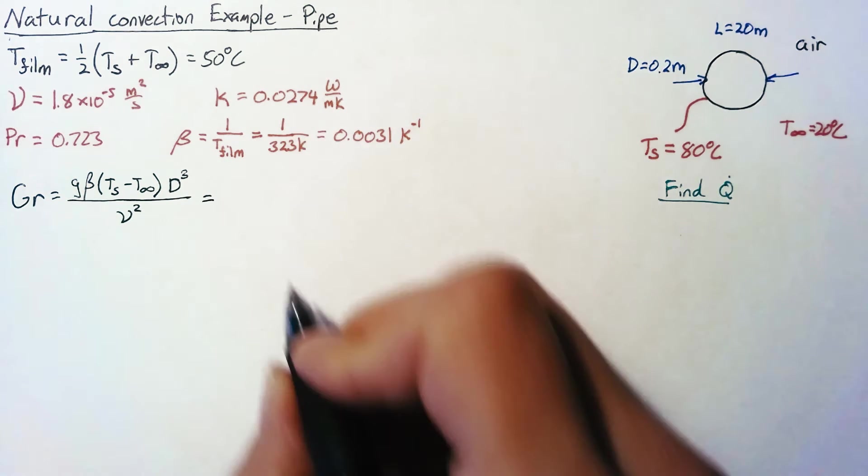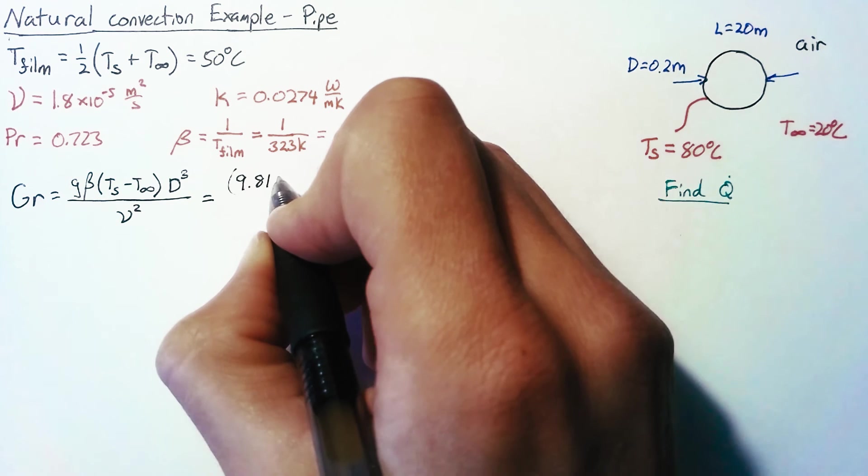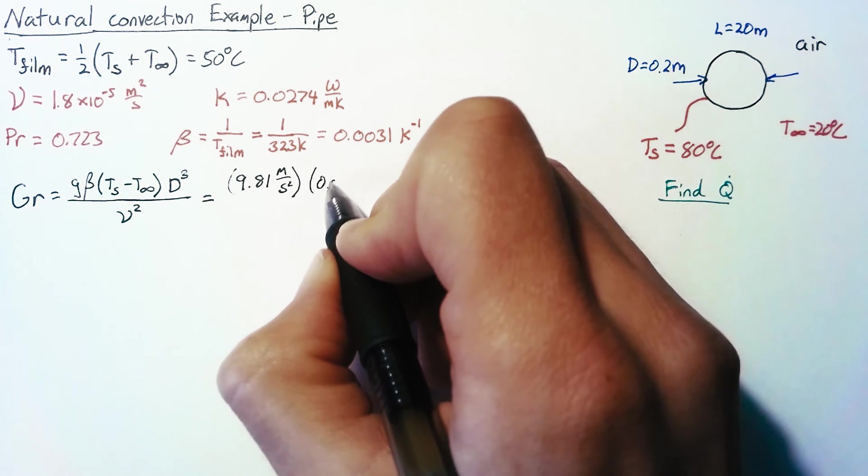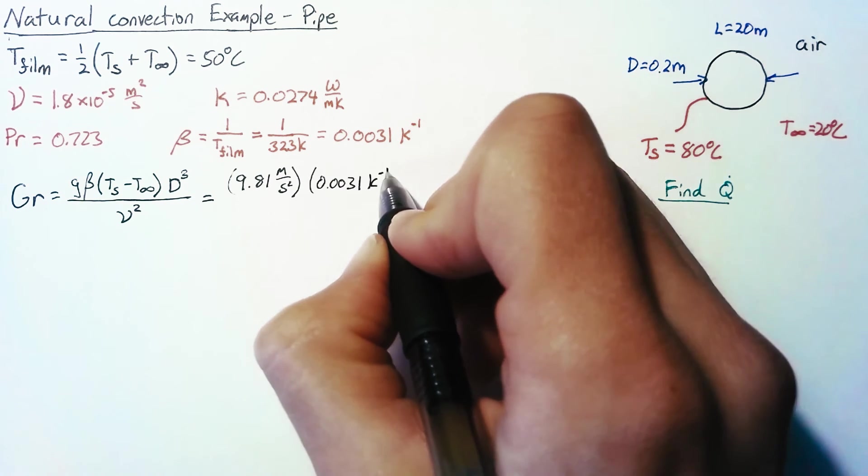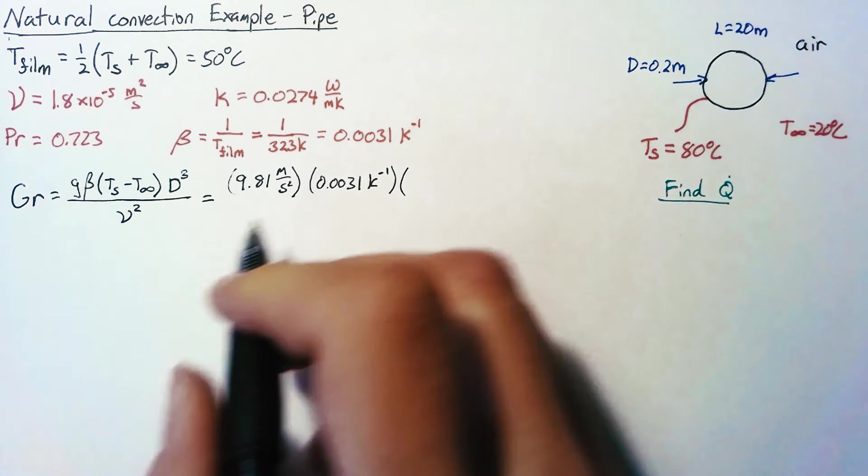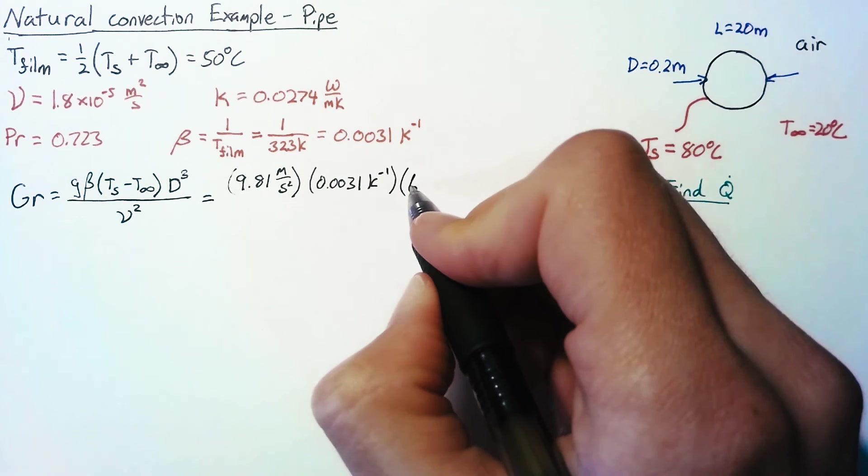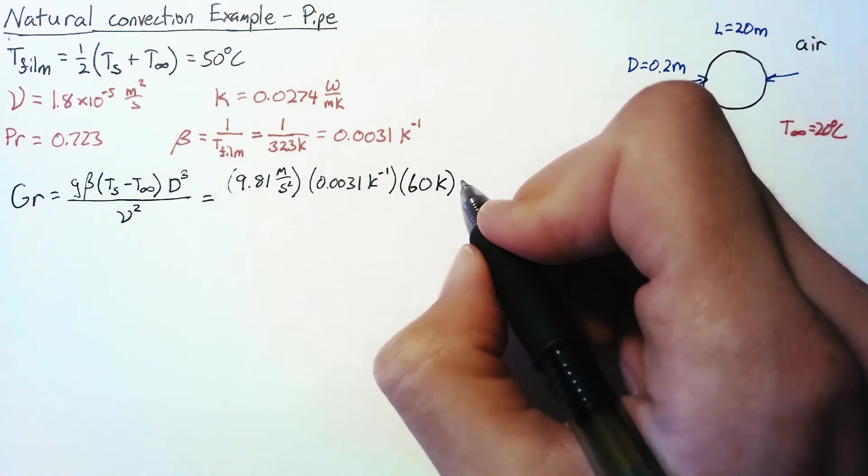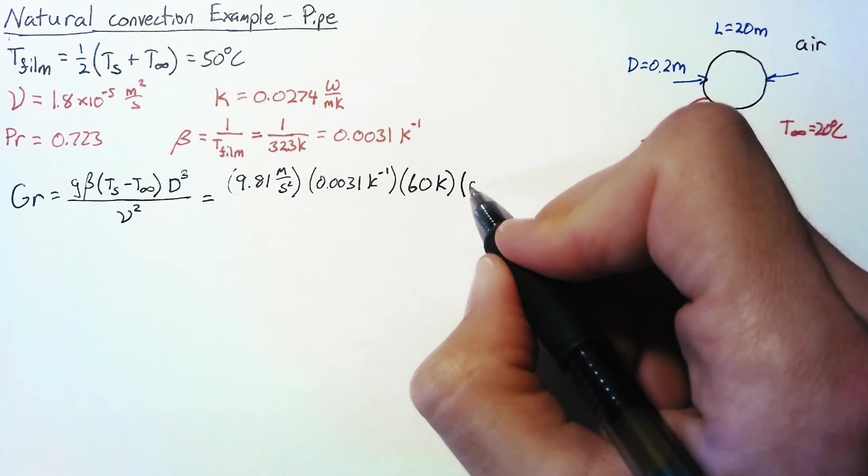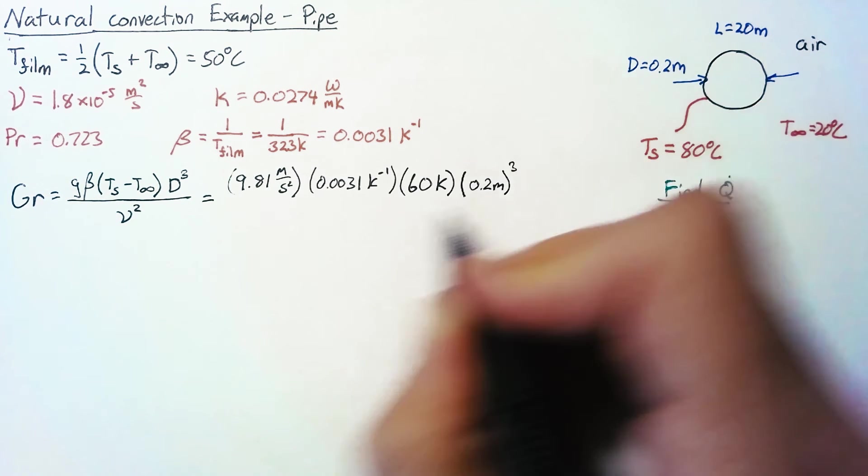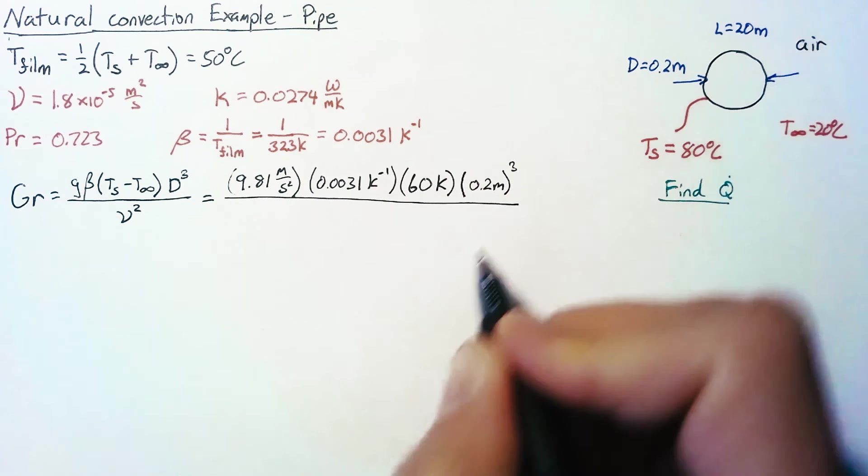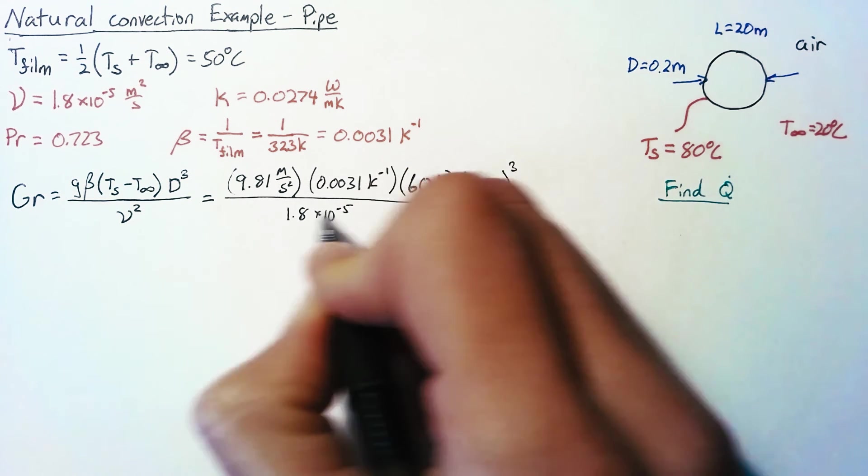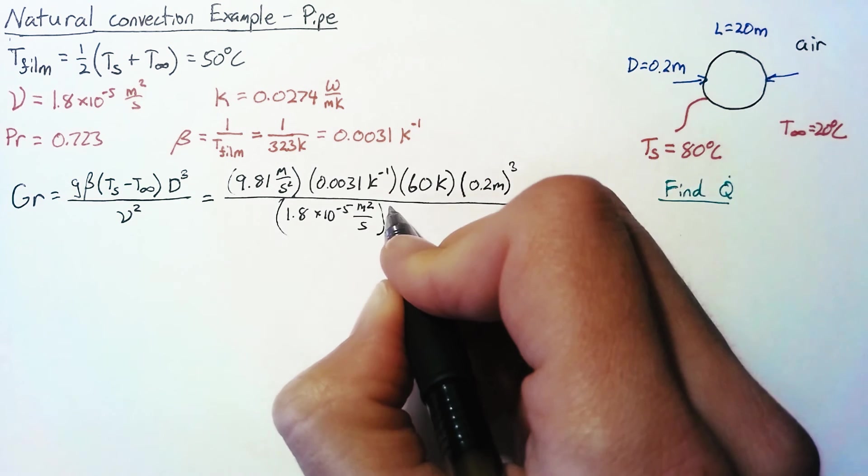So plugging all these values in, gravity of course is 9.81, that's meters per second squared. Our beta value we just said was 0.0031 Kelvin to the negative 1. Our temperature difference is going to be 60. And I'm going to use Kelvin here, though Celsius is the exact same thing. And then our diameter we said was 0.2 meters, and that's cubed. And all of this is divided by our nu, 1.8 times 10 to the negative 5 meters squared per second, squared.